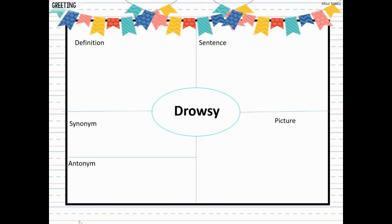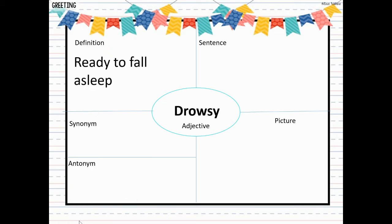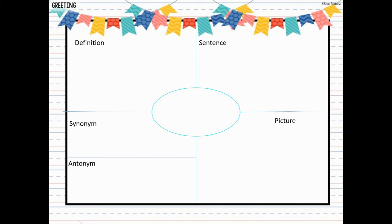The first word we have is drowsy — D-R-O-W-S-Y. Drowsy is an adjective, meaning it describes a noun, and it means ready to fall asleep. Right before bedtime I start to feel drowsy. Sometimes if you do something really hard like play at the beach all day, you might get in the car and feel drowsy on the way home. So our first word, drowsy, is an adjective that means ready to fall asleep.